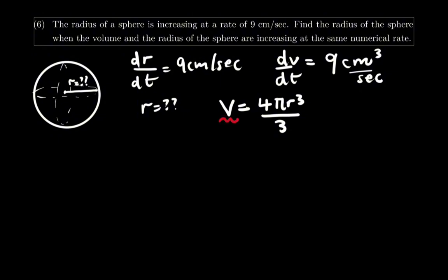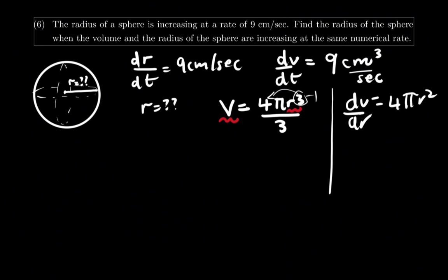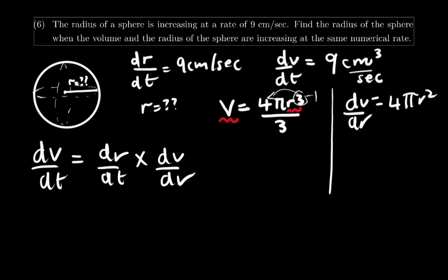We derive the volume with respect to the radius: dV over dr equals 3 times 4 pi r squared divided by 3, which gives 4 pi r squared. Using dV over dt equals dr over dt multiplied by dV over dr: substituting, 9 equals 9 multiplied by 4 pi r squared.